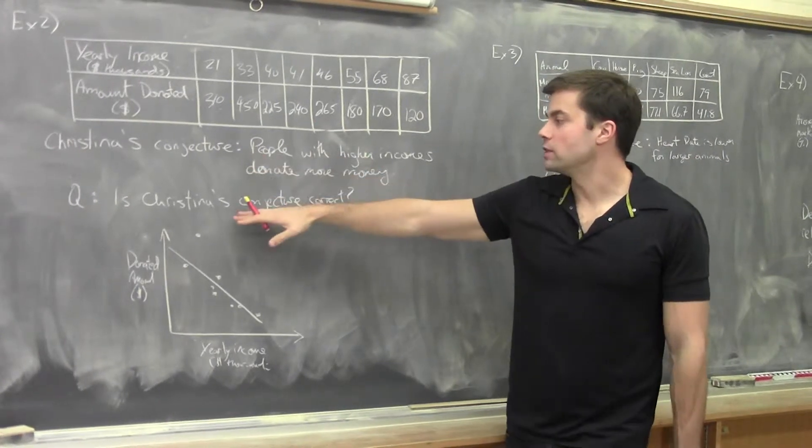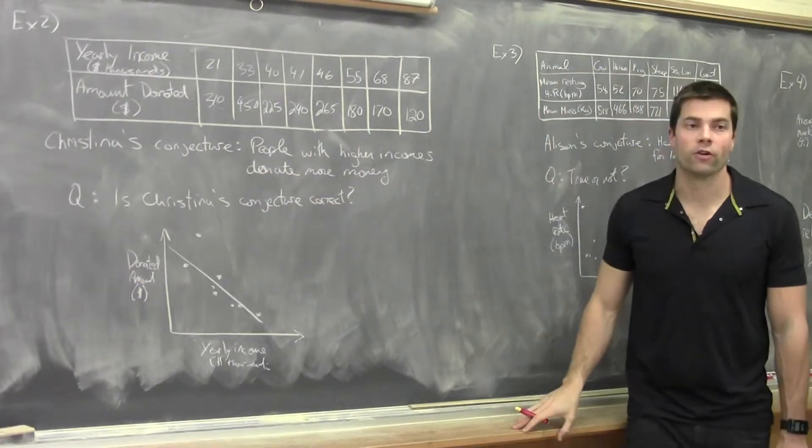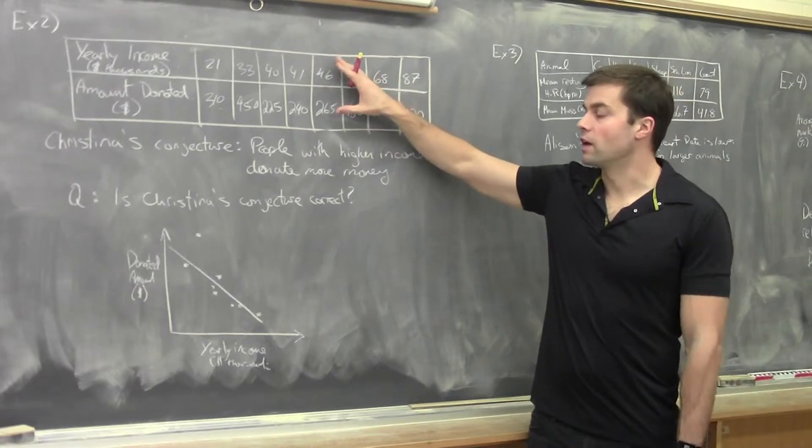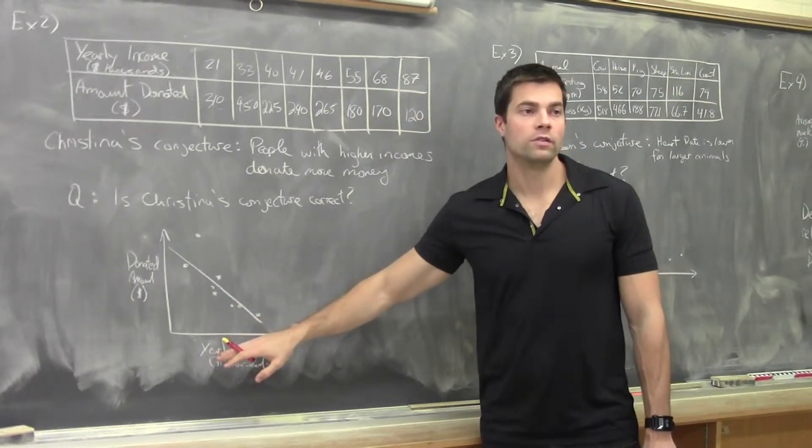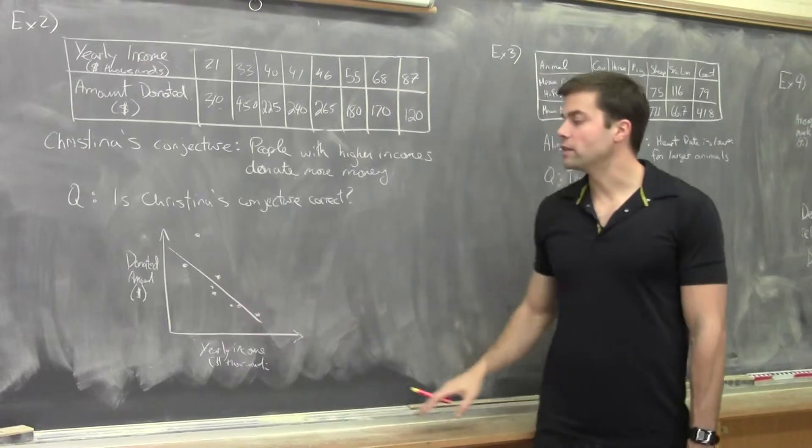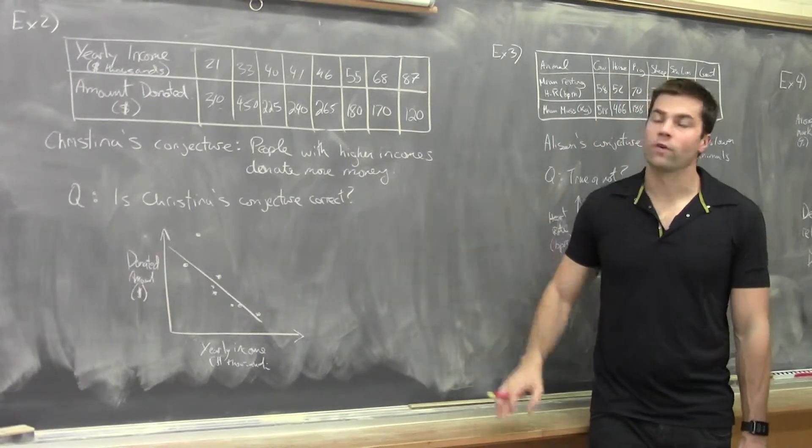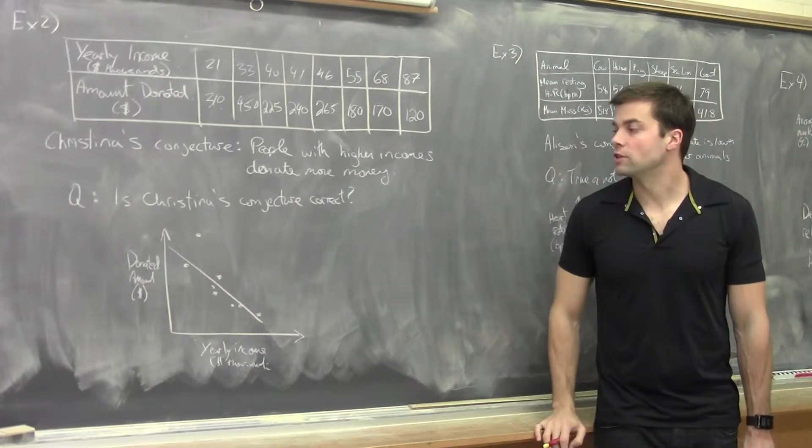Okay, so the question is, is Christina's conjecture correct? So we need to take this data, put it into a table, sorry, into a graph, and then look at the graphs and try to understand if her hypothesis or conjecture is correct.